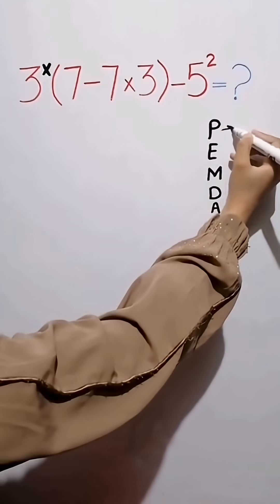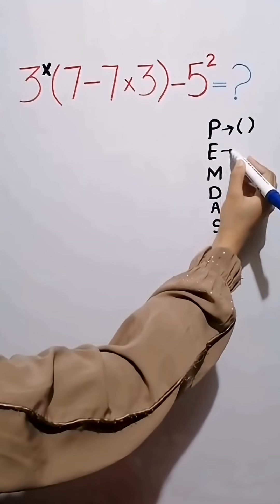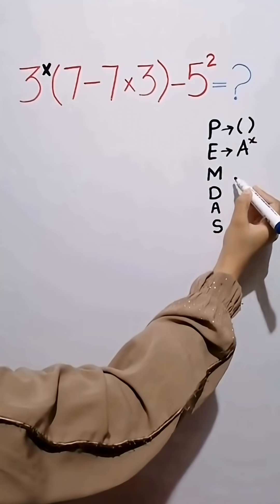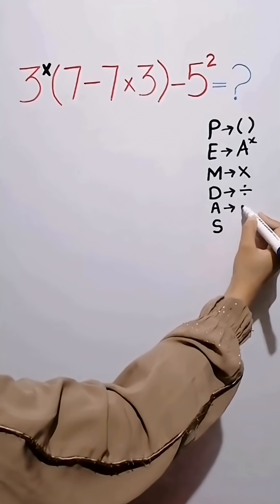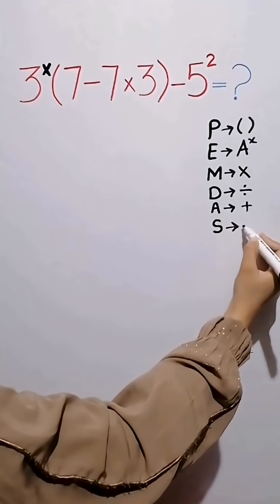In this rule, P stands for parentheses, E stands for exponent, M stands for multiplication, D stands for division, A stands for addition, and S stands for subtraction.